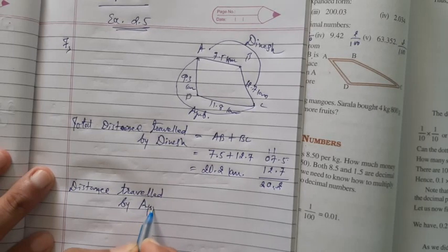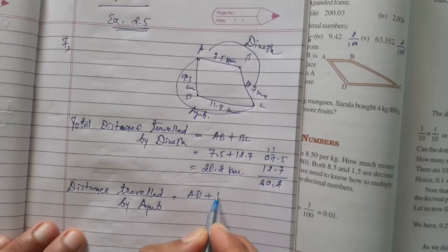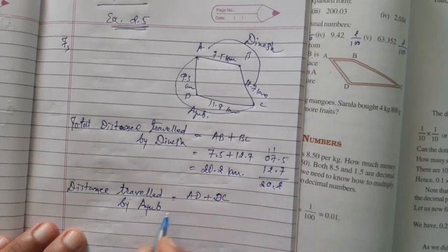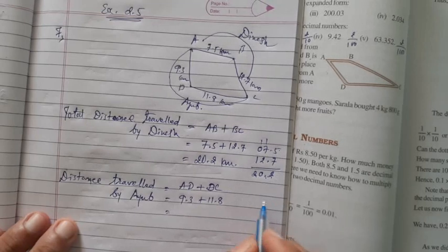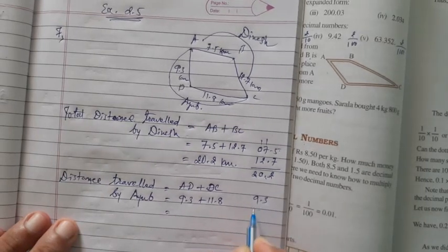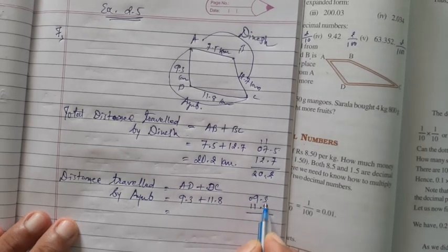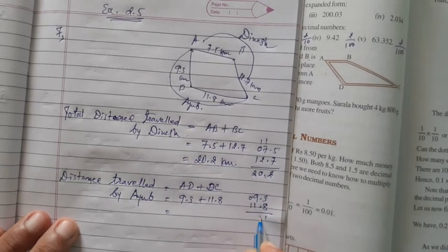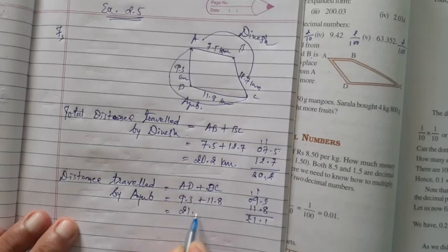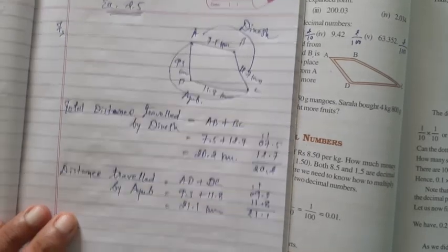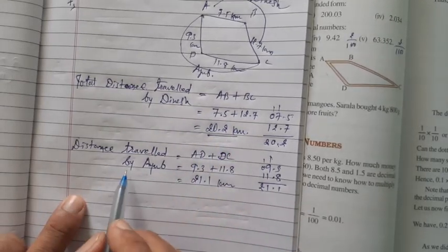Distance traveled by Ayub equals AD plus DC. AD equals 9.3 and DC equals 11.8. Decimal under decimal: 3 plus 8 is 11, write 1 carry 1; 9 plus 1 plus 1 is 11, write 1 carry 1; giving 21.1 kilometers.